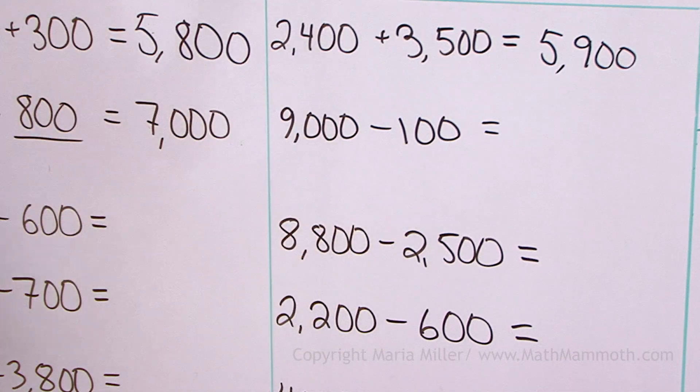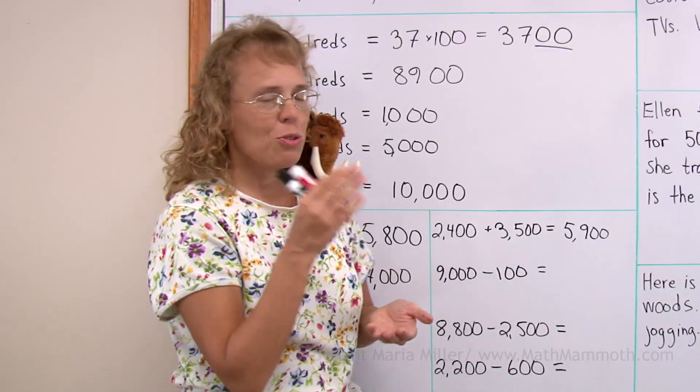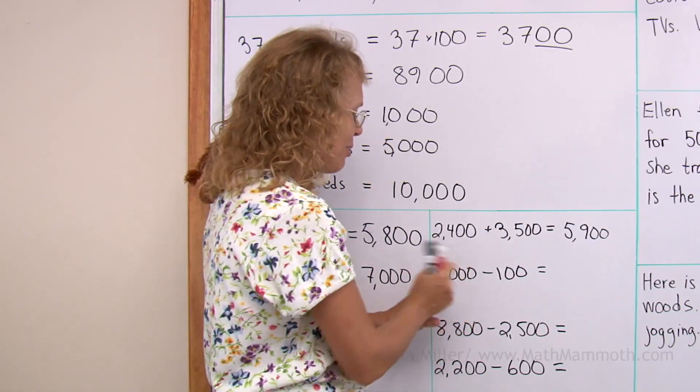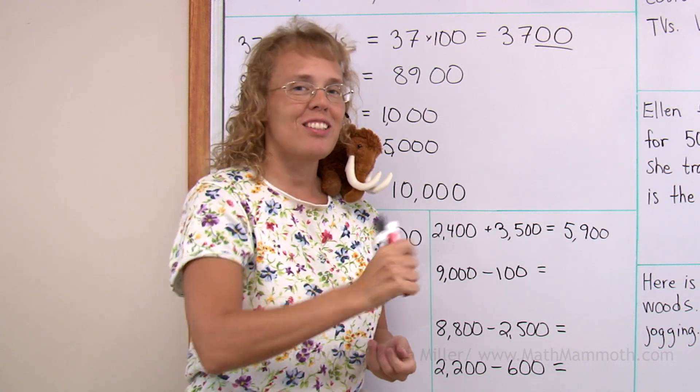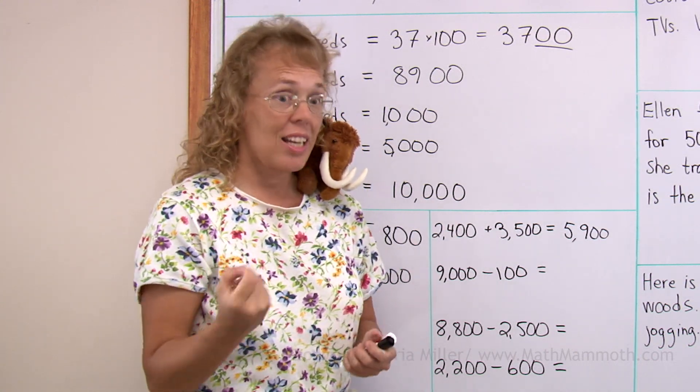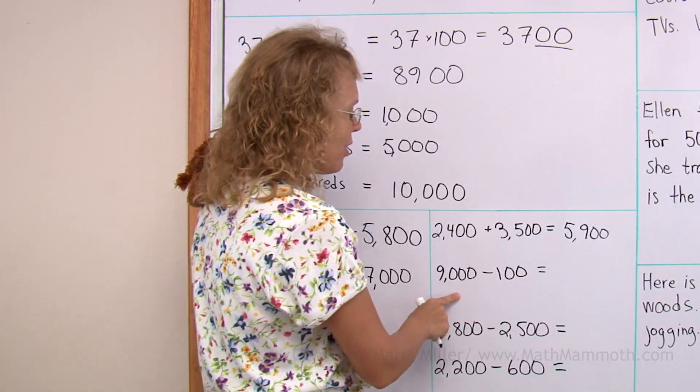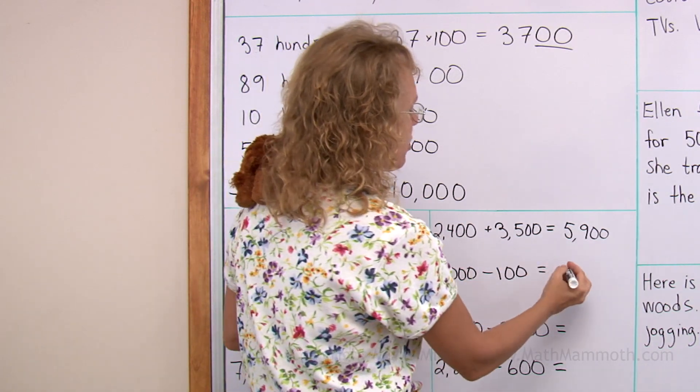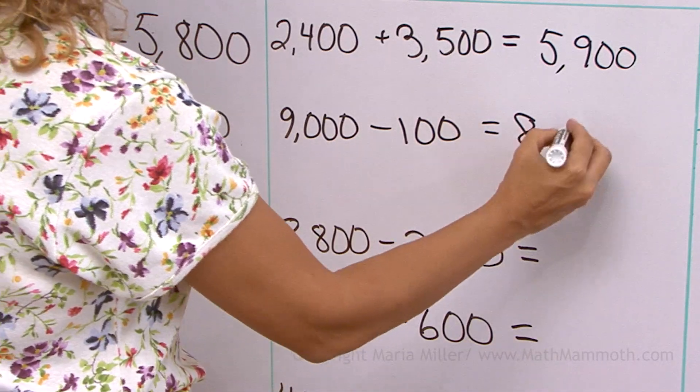9000 minus 100. If you can do 1000 minus 100, you can do this one too. 1000 minus 100 is your helping problem. And that's 900, right? This one here will be in the previous 1000. 8000 something. 8900.